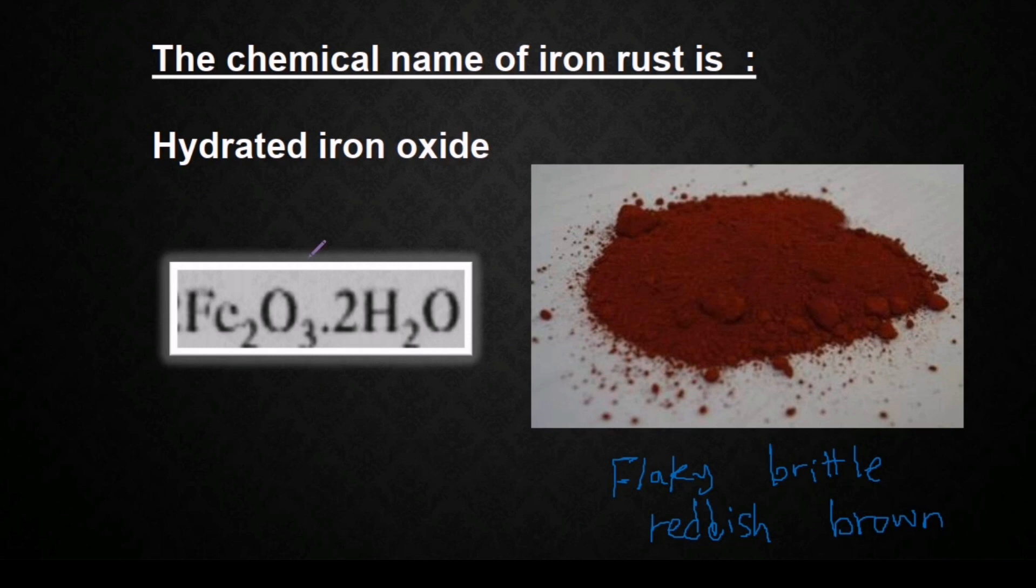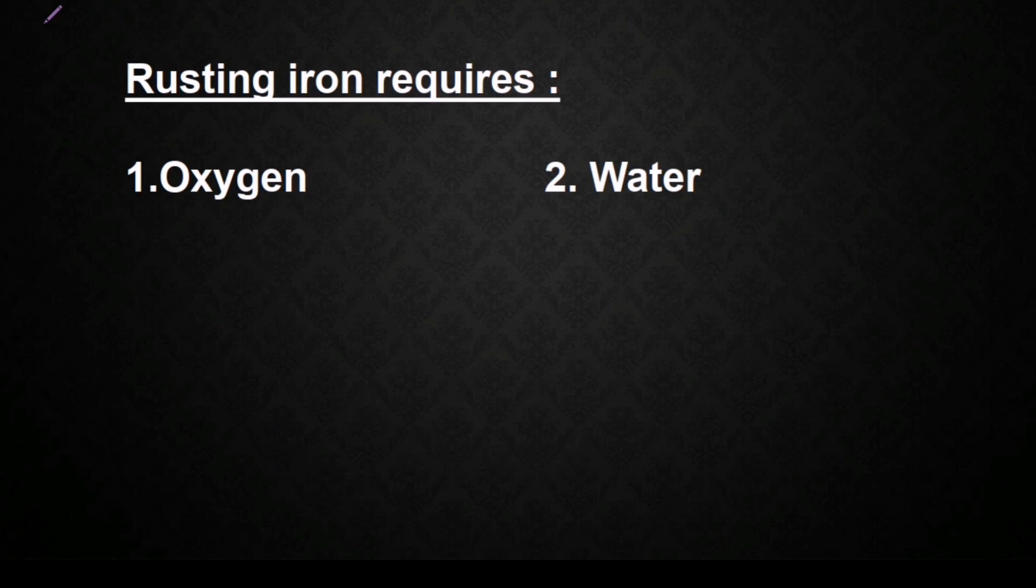Iron rust is hydrated iron oxide, or its formula is Fe2O3.2H2O. Also, the reasons for rusting iron are oxygen and water. So iron Fe reacts with oxygen in a redox reaction to produce Fe2O3, or iron oxide, and to balance this we need to put 4, 3, and 2. So this is iron oxide, and then it's hydrated by water to form Fe2O3.2H2O, which is iron rust.